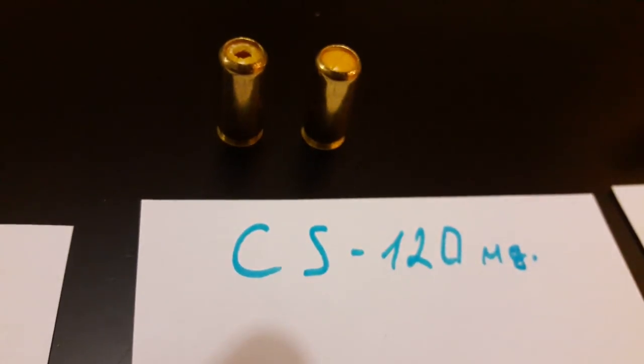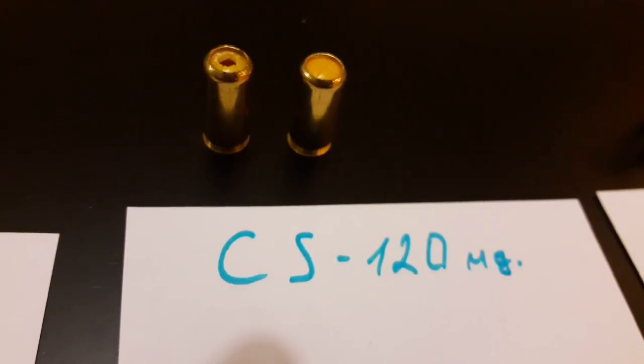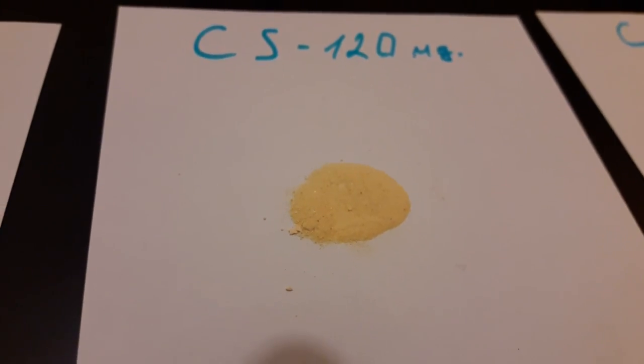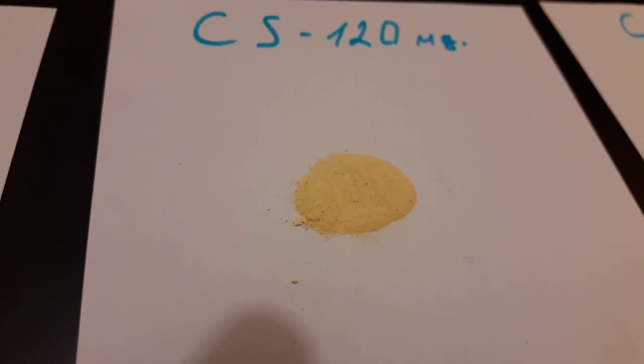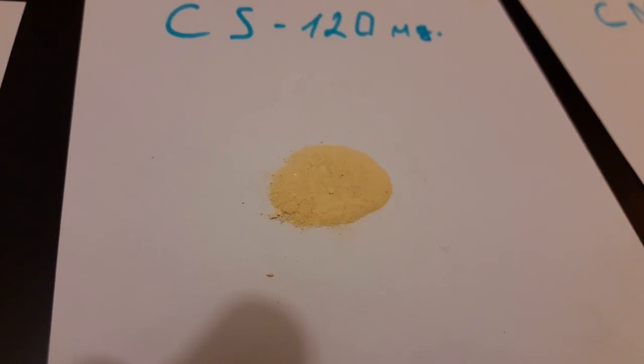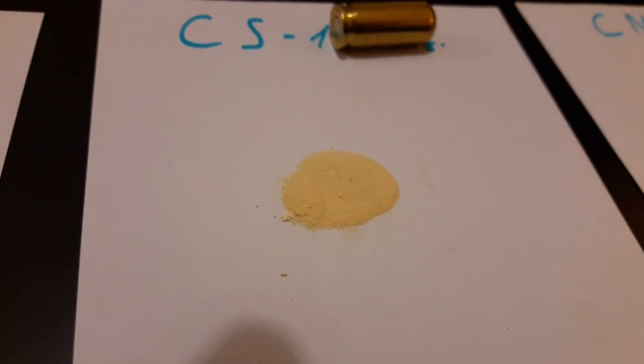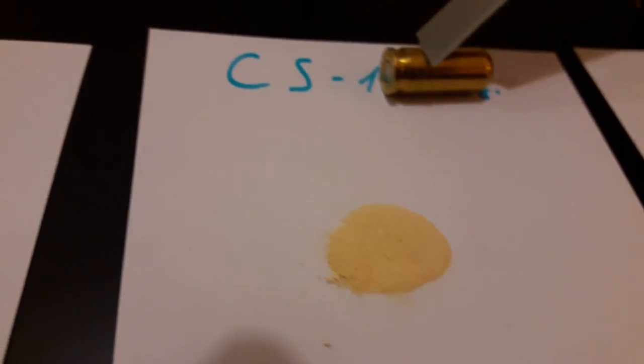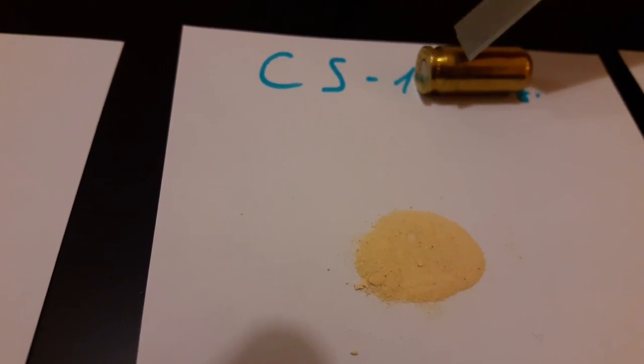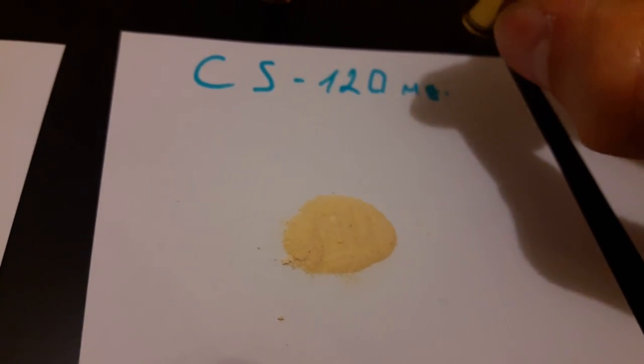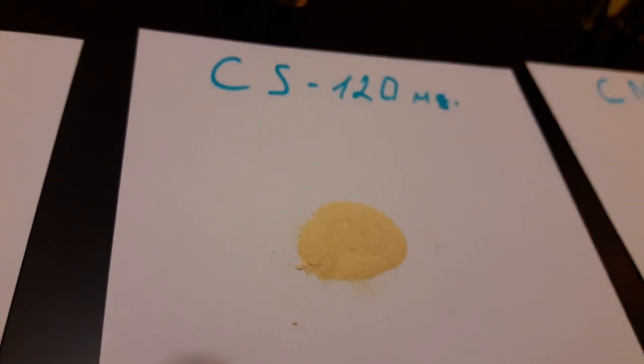Now in here we have special rounds. This is the Wody CS-1, 20 milligrams. What we have here, this is only the active ingredient inside the round, because the gunpowder is separated. It has small wall inside of the round, probably paper cardboard, and I couldn't get the gunpowder out, so it's still inside.